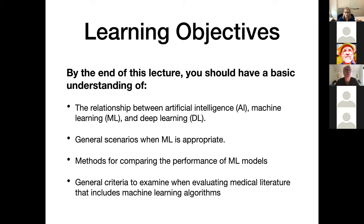We'll start off by going through some basic terminology — things that often get mixed up, like artificial intelligence versus machine learning versus deep learning, and how those all relate to one another. Then we'll talk about different types of machine learning and situations where they're appropriate, and then dig into methods for comparing the performance of machine learning models.